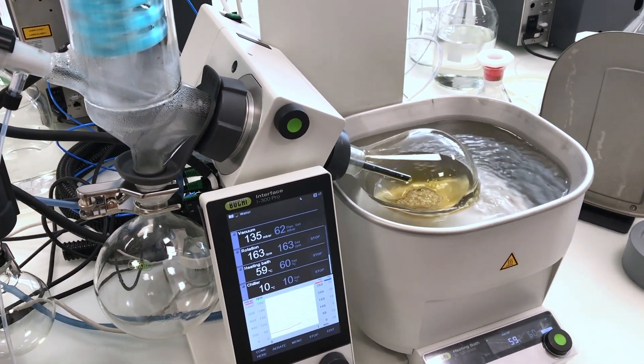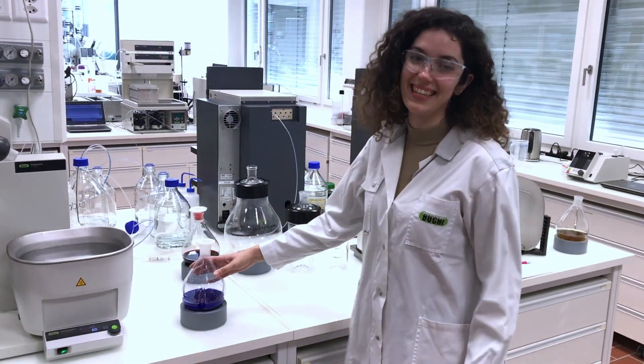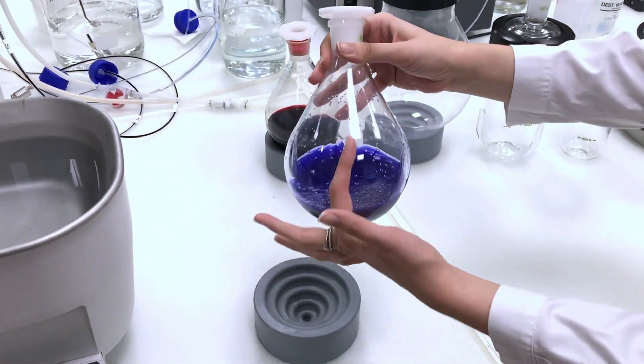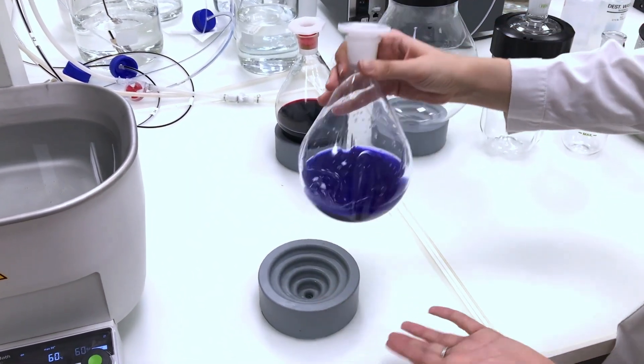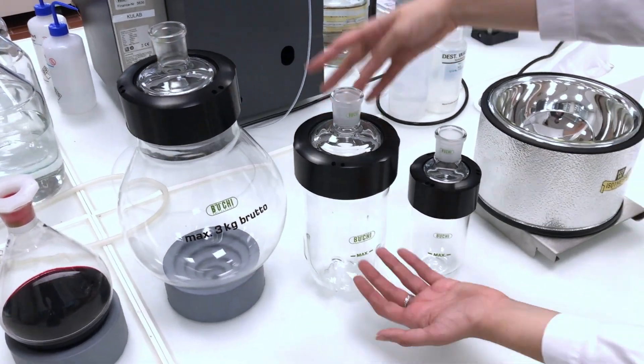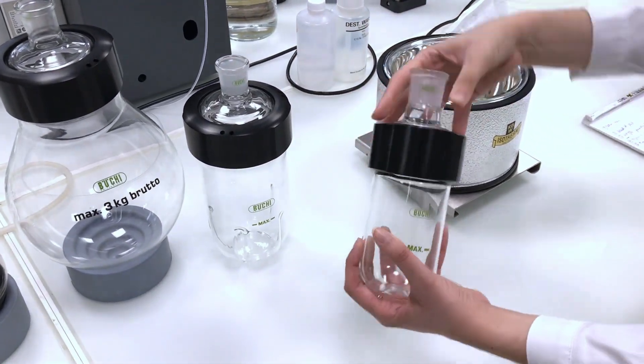So now we're going to see a bit of our accessories. This evaporating flask is flanged, as you can see, and it's for powdery compounds. Here we have what we call our beaker flask with a wide opener, so if you have a sticky sample that might be quite useful for you.